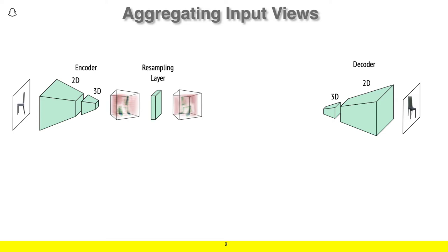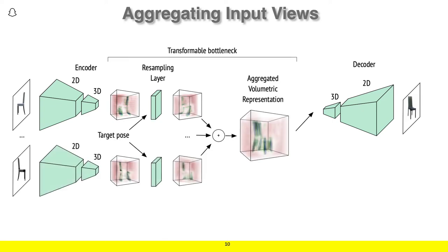Using this approach, it's relatively straightforward to aggregate multiple input views when they're available to improve synthesis quality. To do this, we simply use the resampling layer to transform every input view into the target pose and compute the per-cell average of the feature vectors from each input view before passing it to the decoder.